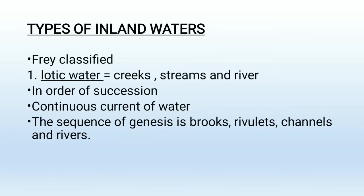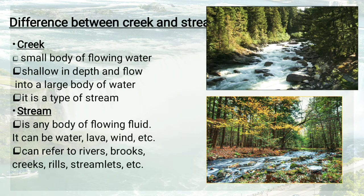Lotic water is a continuous current of flowing water. The sequence of genesis includes brooks, rivulets, channels, and rivers. Brooks are mainly a term for small rivers — they are tributaries of rivers. So the order is small to large: brooks, then streams, then rivers.